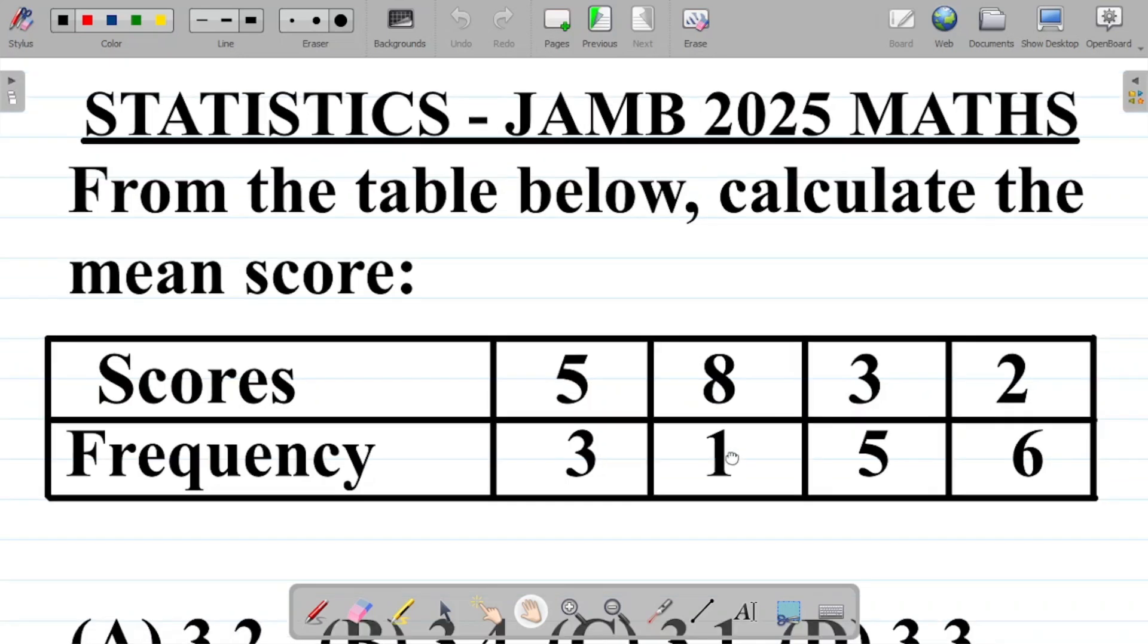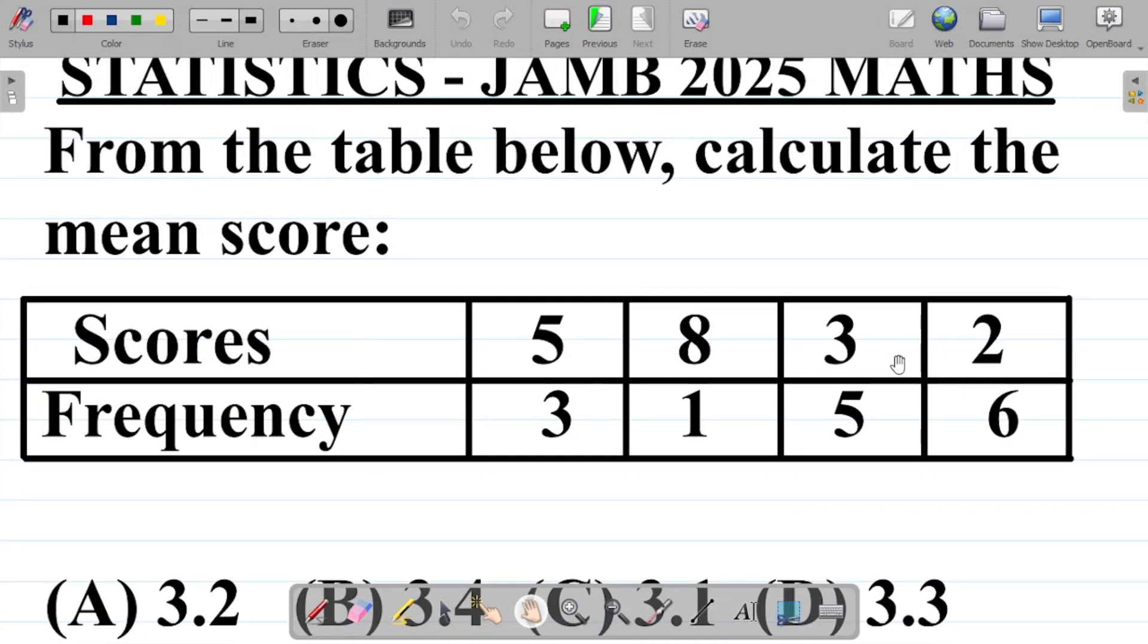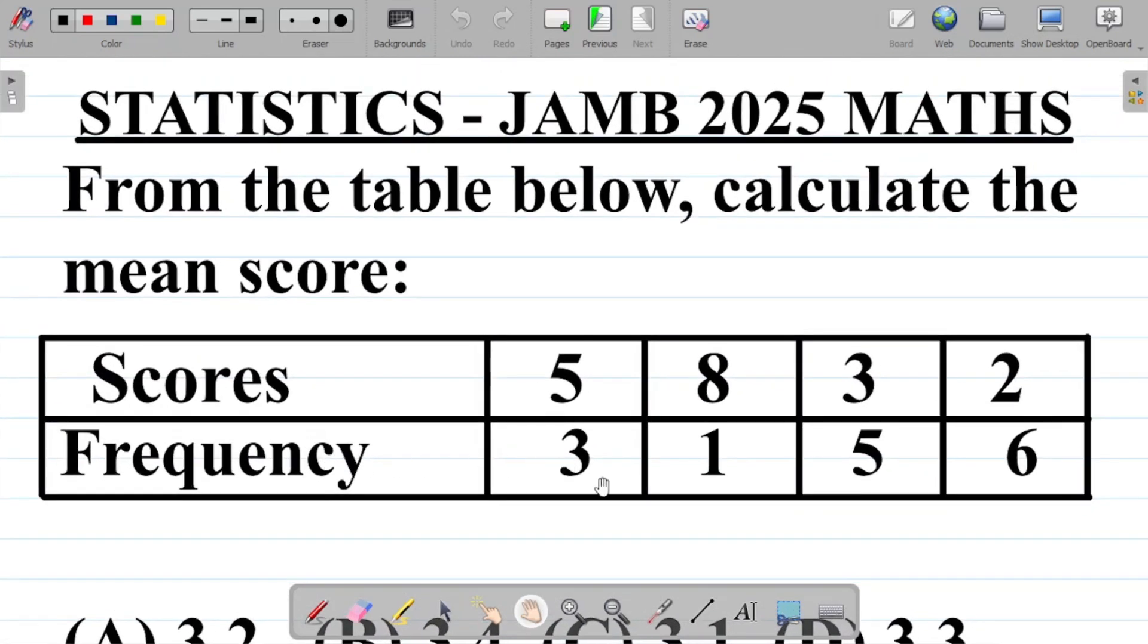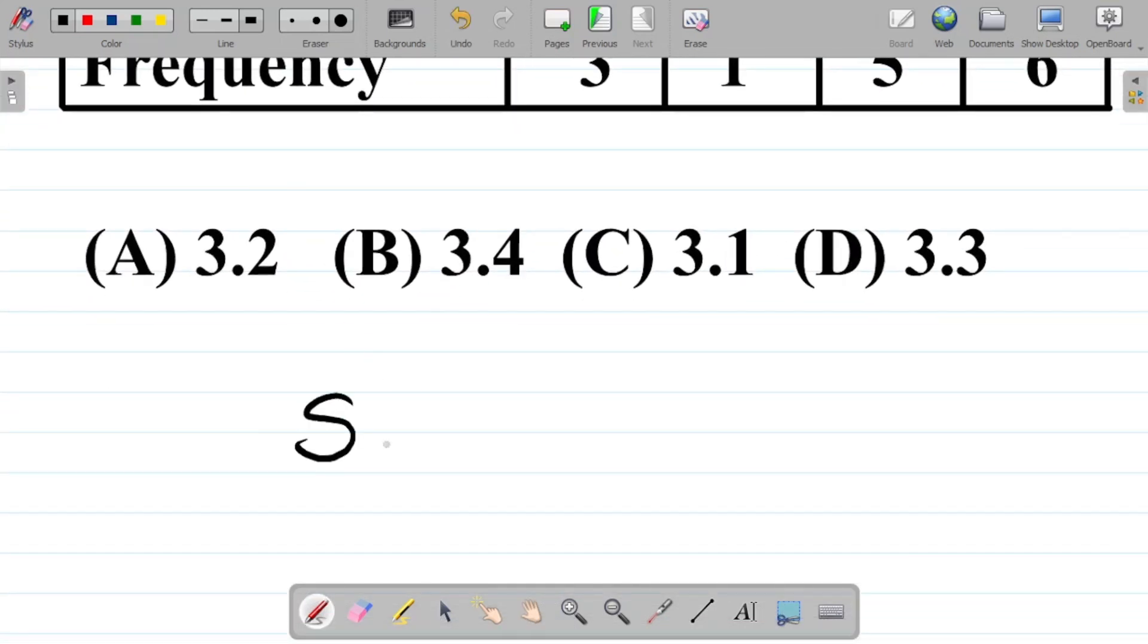So how do we find mean? We're given the options here as A, 3.2, B, 3.4, C, 3.1, and D, 3.3. So you're given the scores as 5, 8, 3, and 2. And also, you're given the frequency as 3, 1, 5, 6 for each of the scores. We have to find the mean score. Now, it depends on the approach you want to give to this solution.